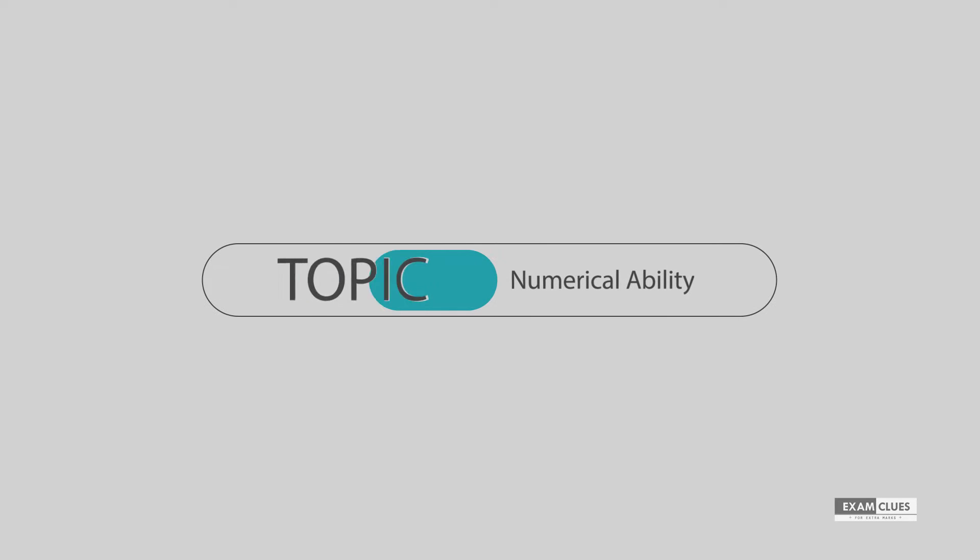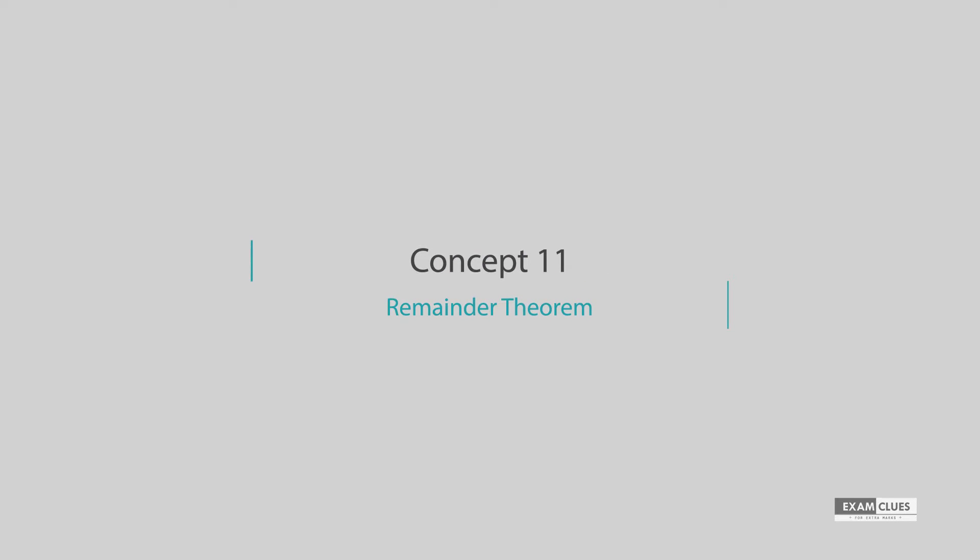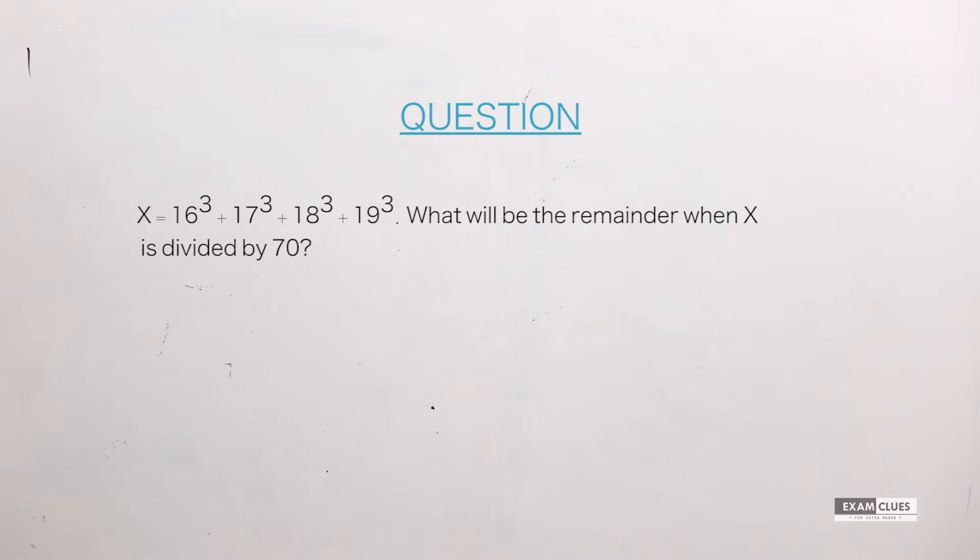Hi guys, welcome to your favorite program on aptitude training. In this capsule we try to cover a question from numerical ability. This is a pretty interesting question. Let's look at this question: if X is equal to 16 cube plus 17 cube plus 18 cube plus 19 cube, what would be the remainder when X is divided by 70?